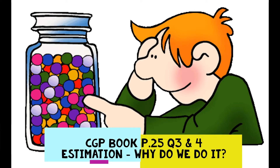The other reason you might estimate something is if you want to just give a quick approximation as to how much something is. An example of that would be if you were in the shops, walking around and collecting some items — something for 30p, something for £1.10, something for £2.30. You might simplify those numbers and add up a rough estimate of the total so that you knew about how much you've spent, whether you need to put anything back or whether you've got enough money to buy something else.